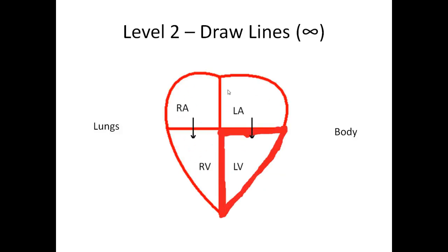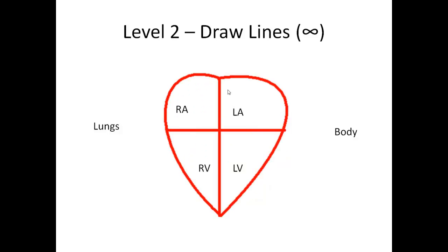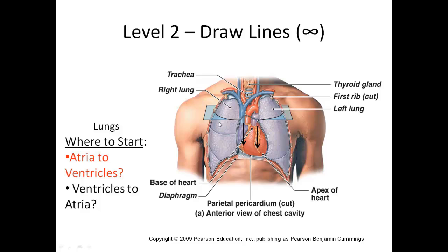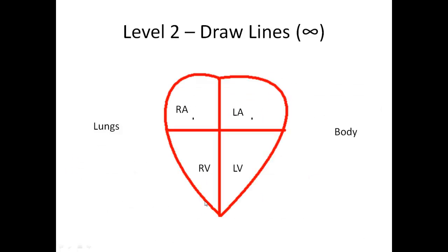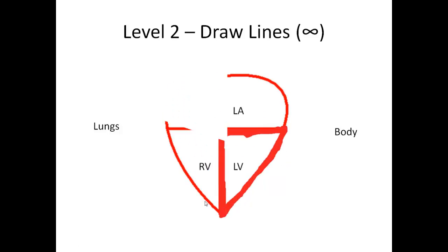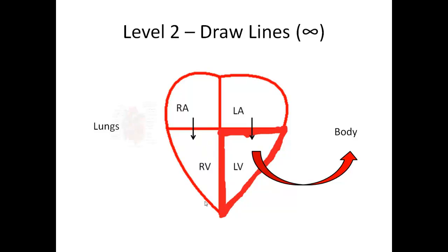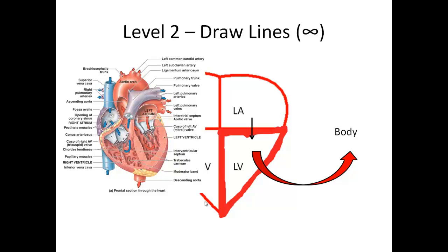Next, decide whether to continue from the right ventricle or the left ventricle. Notice that the left ventricle has a thicker wall — the heart is a cardiac muscle, and like any muscle, the harder it works, the bigger it gets. The left ventricle works harder because it pumps blood to a greater distance: the rest of the body is farther from the heart than the lungs, which are right next to it. So the left ventricle pumps to the body, and the right ventricle pumps to the lungs, giving the left a thicker myocardium.